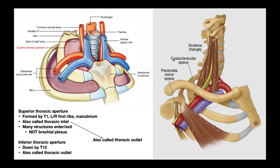Then we have the costoclavicular space, which lies between the clavicle superiorly and the first rib inferiorly. Three important structures pass through that costoclavicular space: the subclavian artery, subclavian vein (which become axillary artery and vein after passing over the first rib), and the brachial plexus. The brachial plexus comes from the interscalene space within the scalene triangle and then passes through the costoclavicular space — it's not actually moving through the thoracic inlet, even though it is associated with this syndrome.